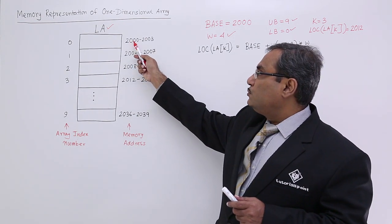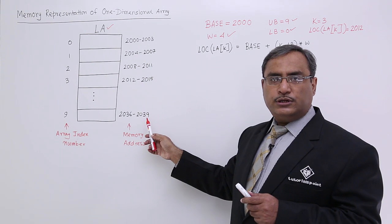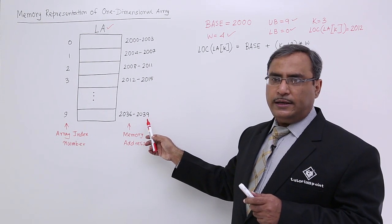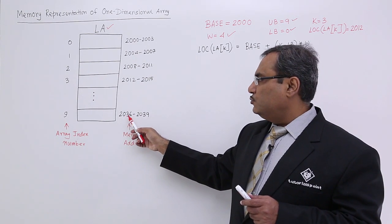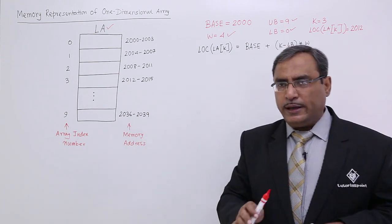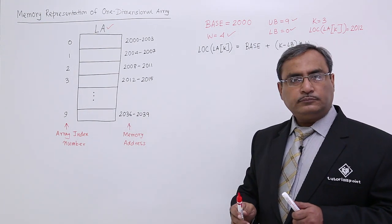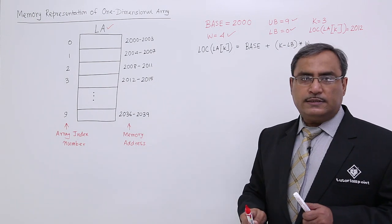If we start from 2000, the last location number will be 2039. It will be starting from 2036. In this way, we have drawn this one. They are denoting the memory address.